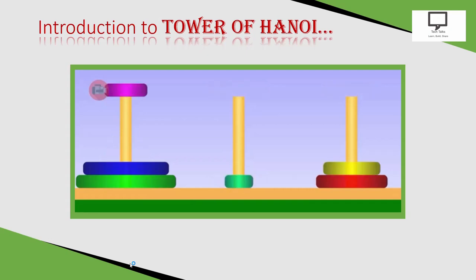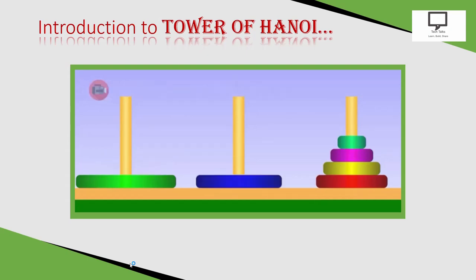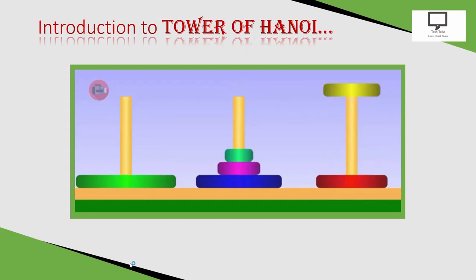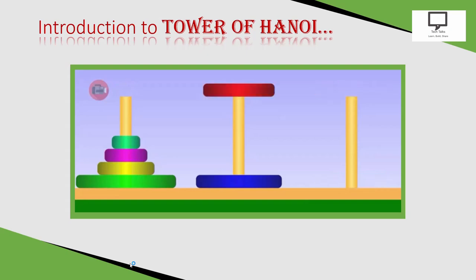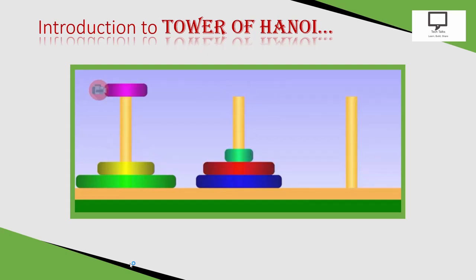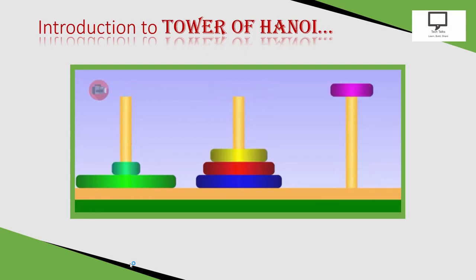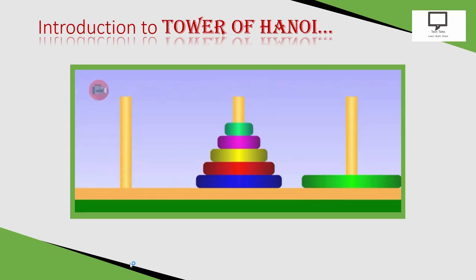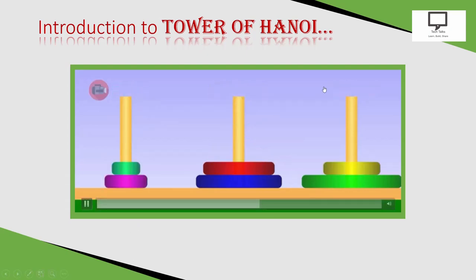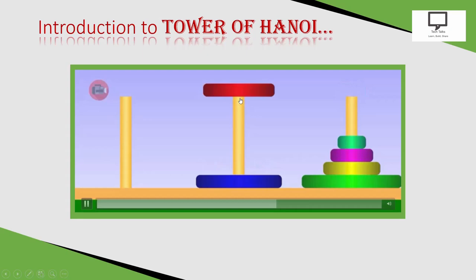In the Tower of Hanoi, you must observe that we cannot place a larger disk on top of a smaller disk. This is the rule to follow while transferring disks from one rod to another. At the end, the third rod must hold the set of disks in the proper sequence — the largest disk at the bottom and the smallest disk on the top. This is also an application of the stack, as only the top of the stack is accessible, and all three rods play the role of a stack in this example.